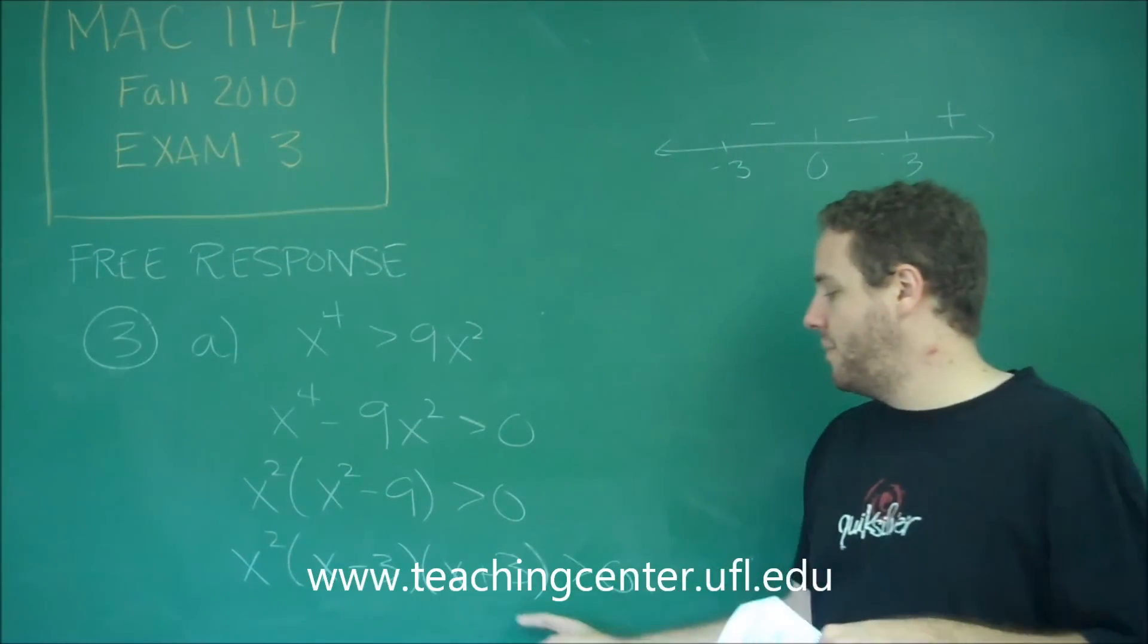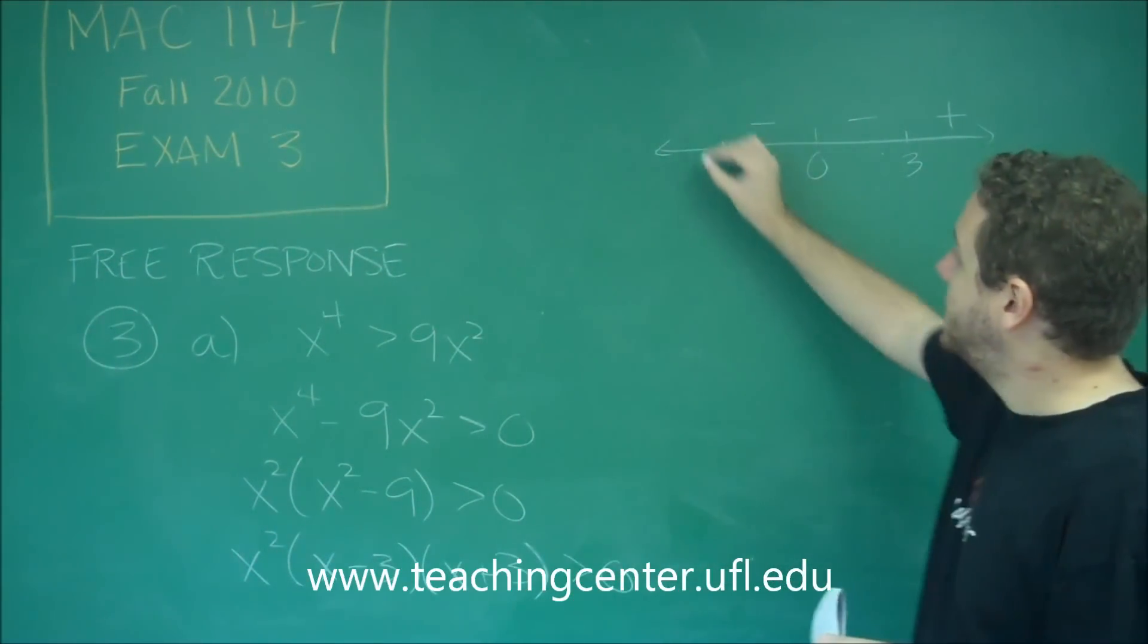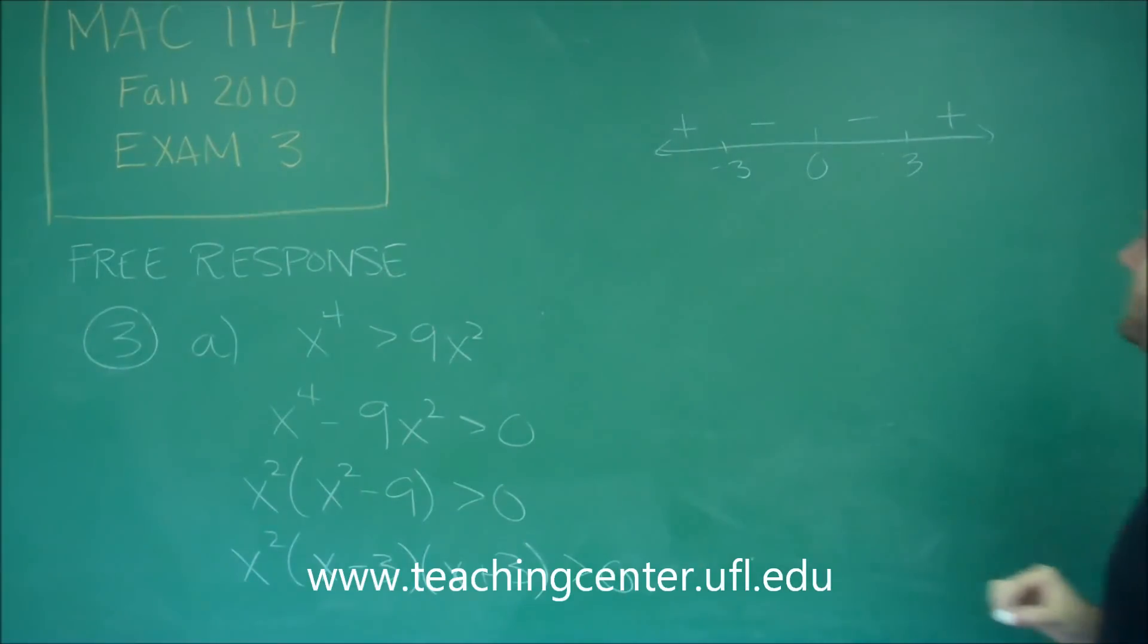And negative 3 is coming from x plus 3, that has a power of 1, so it will change. So we have that set up for our number line.